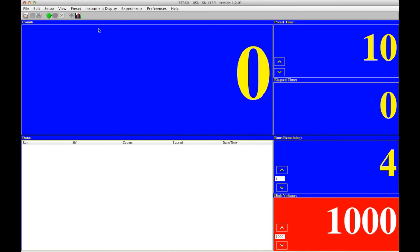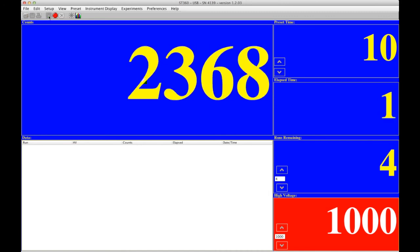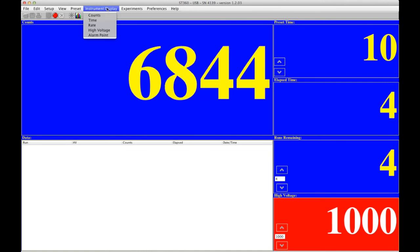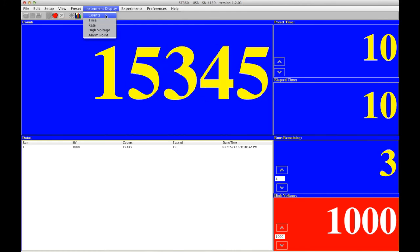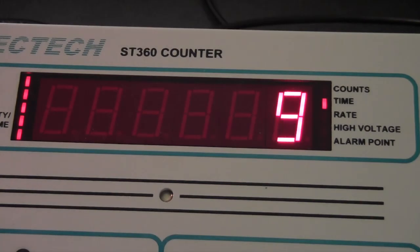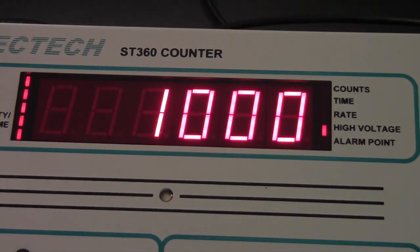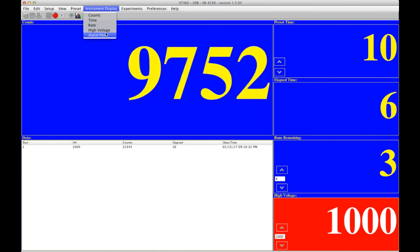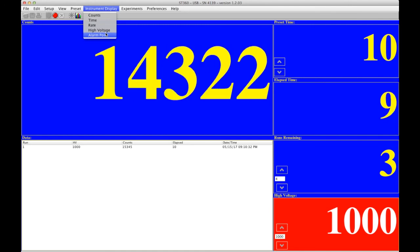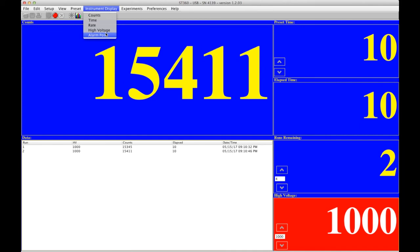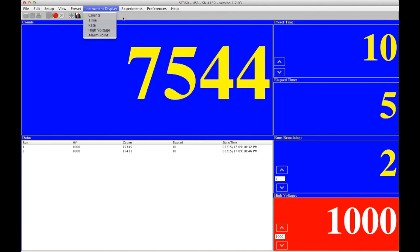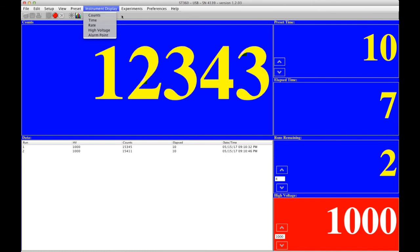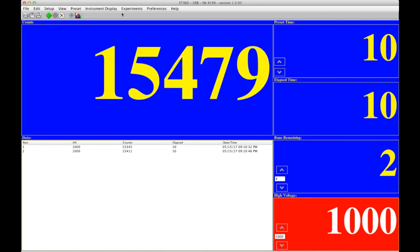There's some more features to show you. Now, the instrument display, this controls what's happening on the actual instrument. If I press this, you'll see counts on the instrument, time, rate, high voltage, alarm point, and so forth. You cannot control the instrument with the instrument controls at this time in software mode. It's fully controlled from the software, from the computer. But if you disconnect it, then you get the control back.